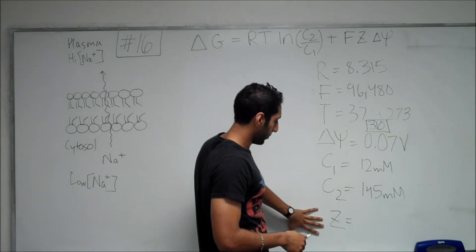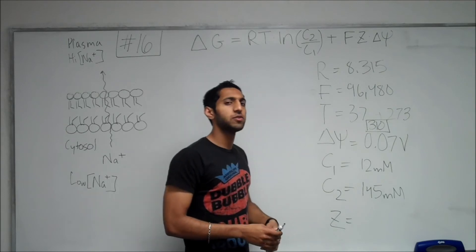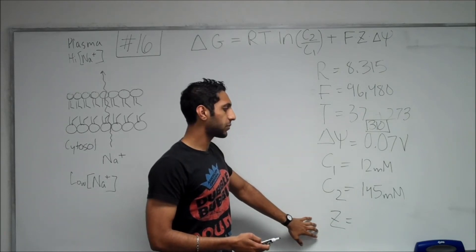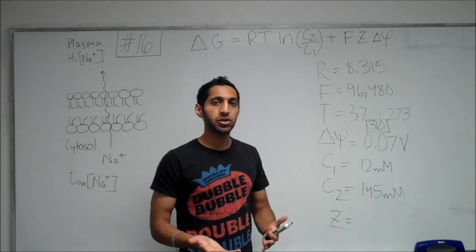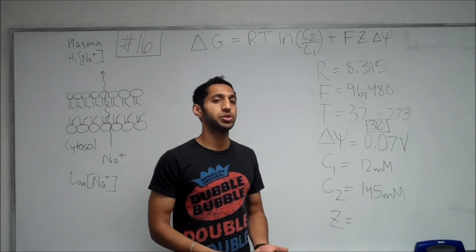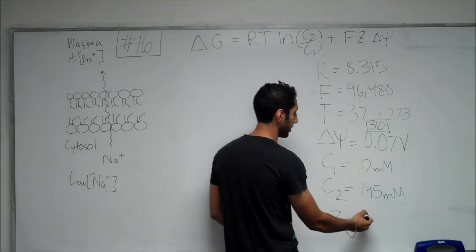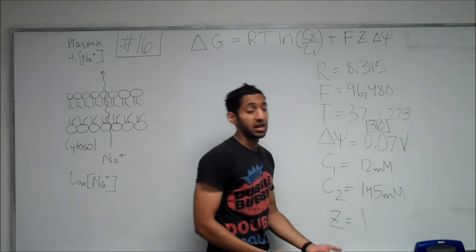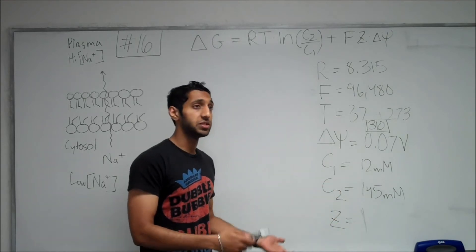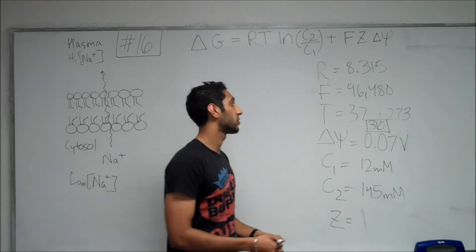And the last thing we didn't really quite get a value for was Z. And Z represents the charge of the ion in question. Since we're dealing with sodium ions, they always have a plus one charge. So, Z is just simply one. And if it was calcium, we would know it would be two, and so on and so forth. You can do it for all of these different ions.